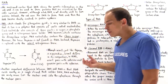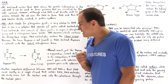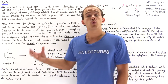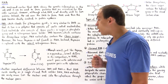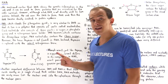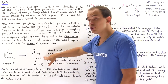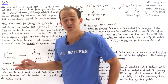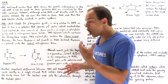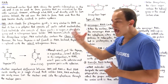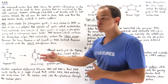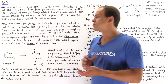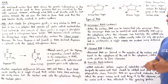Recall that in DNA, thymine pairs with adenine. In RNA, since we no longer have thymine, adenine pairs with uracil instead. So in RNA molecules, adenine pairs with uracil while guanine pairs with cytosine.